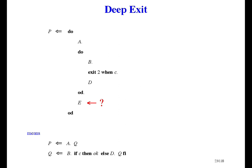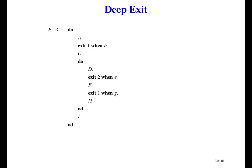So it doesn't have any place in the refinements at the bottom. For E to be executed, the inner loop would have to have a one-level exit. So here's an example like that.